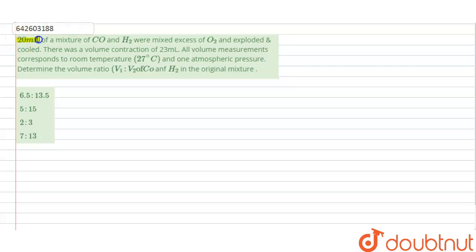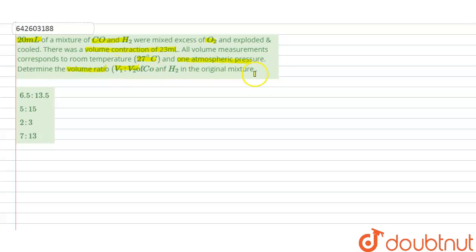The question is: 20 ml of a mixture of carbon monoxide and hydrogen were mixed with excess of oxygen and exploded and cooled. There was a volume contraction of 23 ml. All volume measurements correspond to room temperature 27°C and one atmospheric pressure. Determine the volume ratio V1 to V2 for carbon monoxide and hydrogen in the original mixture.